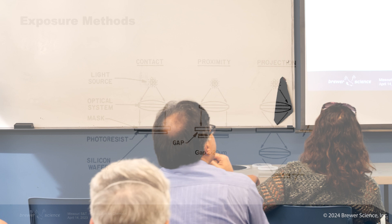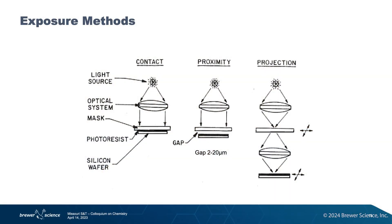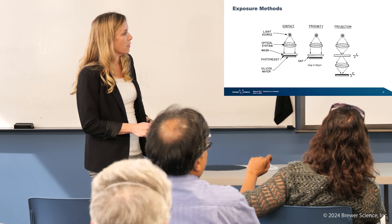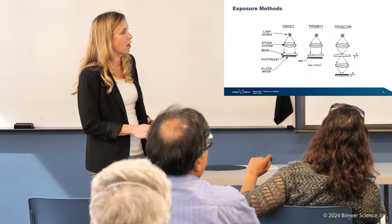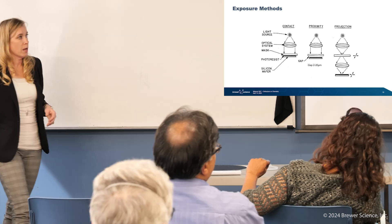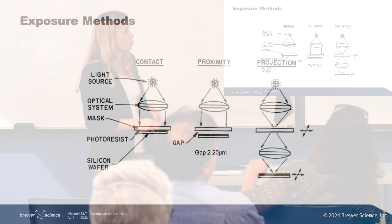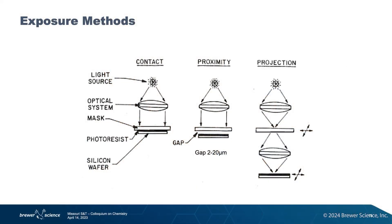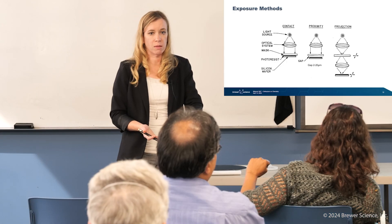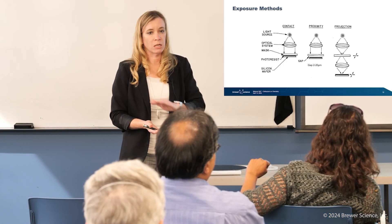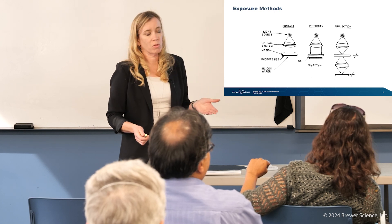So there are a couple of different exposure methods or types of illumination systems used today. First is contact. Contact is exactly what it sounds like — we have the light source and some optical systems, and then the mask, which is actually in contact with the photoresist. But where the industry went after that — we don't want to touch the resist. Imagine if you're touching this resist, you move to another wafer, touch another resist — there's contamination, you're getting chemical leftover on that mask. It's not the best way.